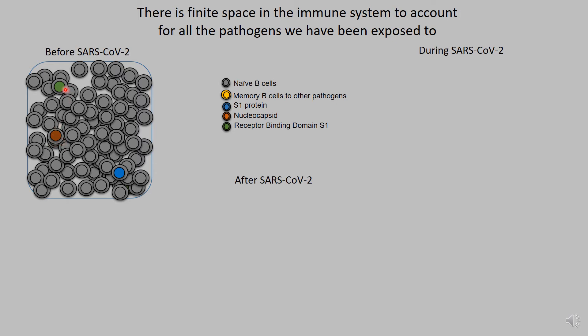For example, you could have naive B cells to the receptor binding domain of the SARS coronavirus spike protein, or to a different epitope on the spike protein, or to other proteins like the nucleocapsid protein, which is also a known antibody target. All of these cells are naive, waiting to respond, and a small portion of the naive B cells are directed against SARS. That's how your immune system gets generated initially.